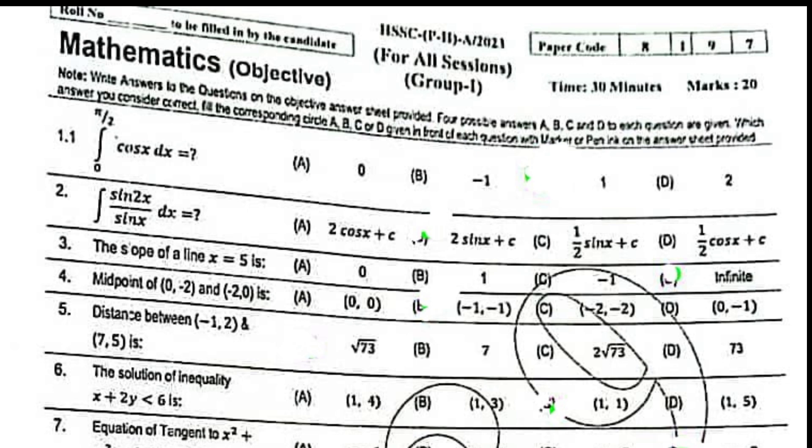Integration upper limit pi over 2, lower limit 0, cos x dx equal to 1. Integration of sin 2x divided by sin x dx equal to 2 sin x plus constant of integration. The slope of line x equal to 5 is infinite.